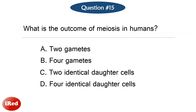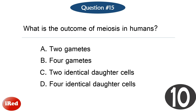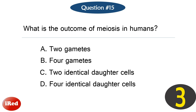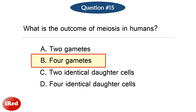Question number fifteen. What is the outcome of meiosis in humans? The correct answer is letter B: four gametes.